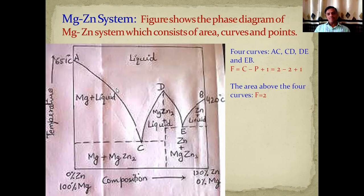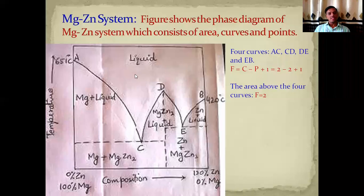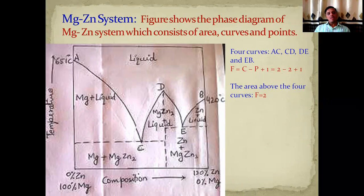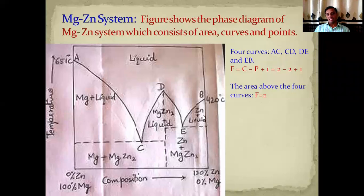This phase diagram also consists of four areas or regions. The area above all the curves is the liquid state. The area below curve AC contains solid magnesium. The area below curve CDE contains solid MgZn₂. The area below curve BE contains solid zinc. So there are four areas and four phases: liquid state, solid magnesium, solid MgZn₂, and solid zinc.